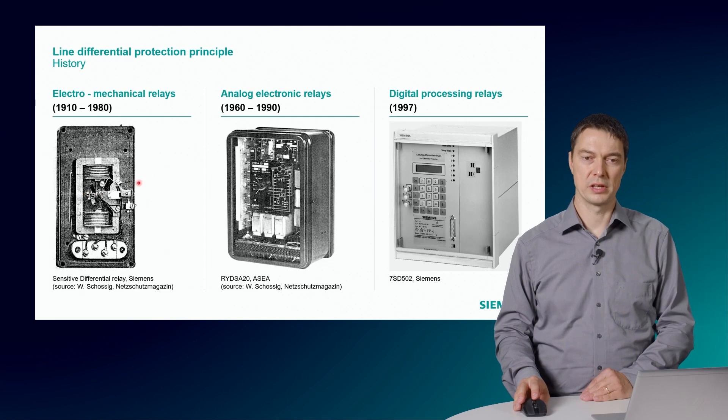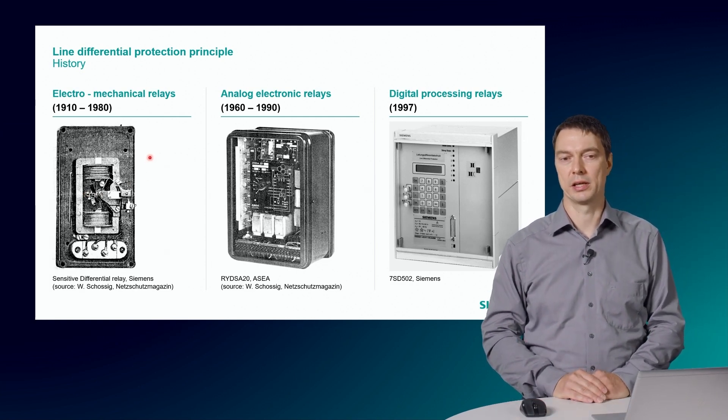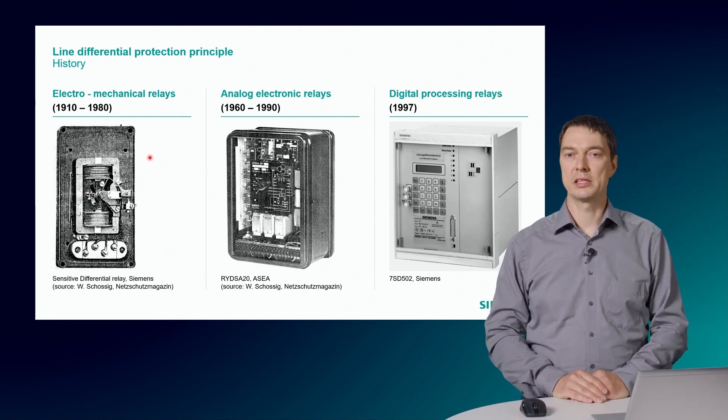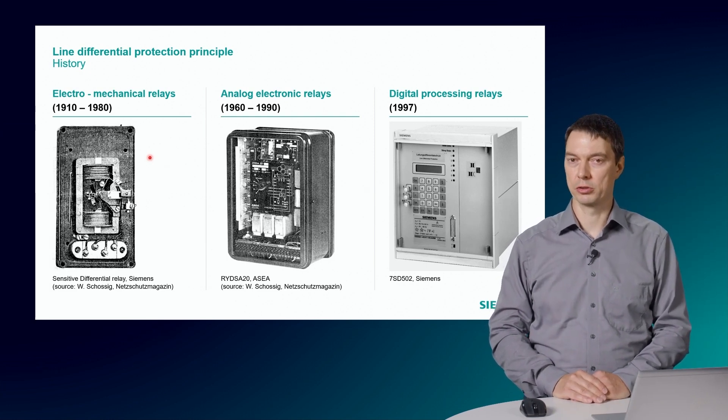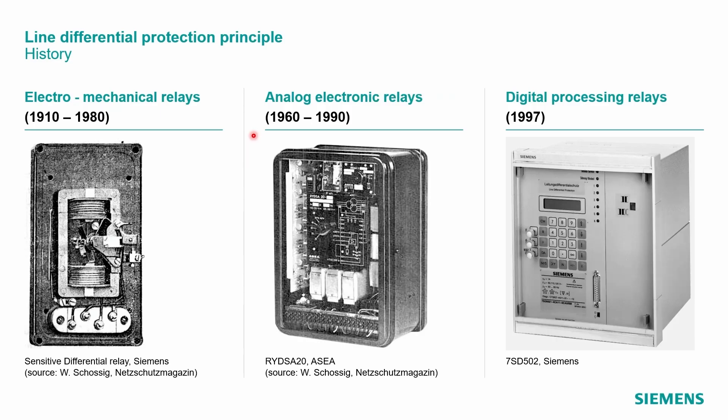This principle was then applied in electromechanical relays from about 1910. In these relays, the mechanical torque produced by the differential current operated a drip contact. Around 1960, analog electronic circuits replaced the balanced beam systems and a higher sensitivity was obtained.